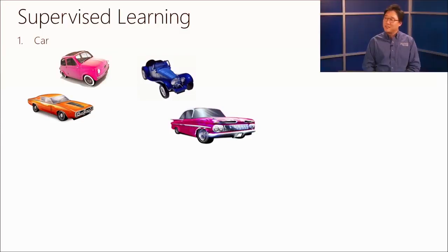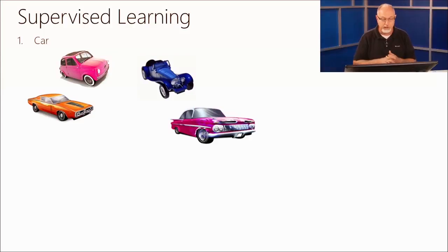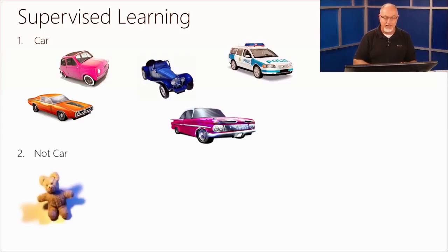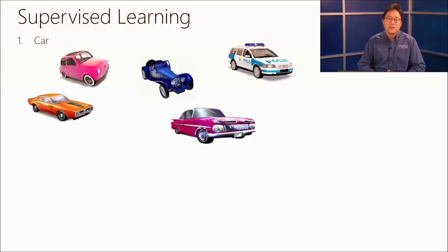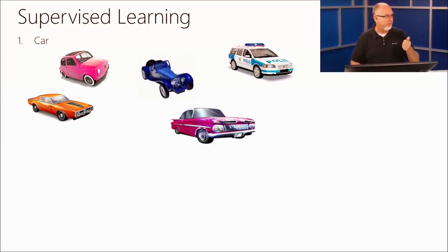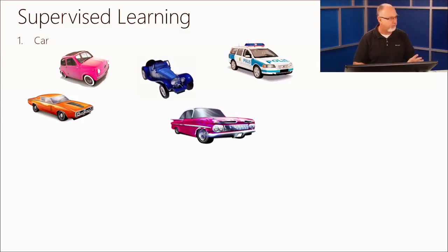How about this one? That definitely looks like a car — that's a nice car there. And how about this one? It looks like a car, it has something on top, but it definitely fits in the category — your algorithm is confirmed. So you as the computer have developed an algorithm that says: if wheels equal four, if windshield equals true, if headlights equal two, if doors equal one or two or whatever — equals car. That's your algorithm.